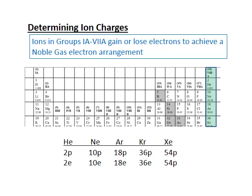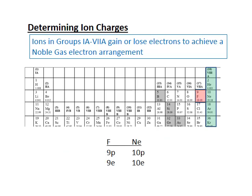The noble gases are: helium with 2 electrons, neon with 10, argon with 18, krypton with 36, and xenon with 54. Fluorine, the next-door neighbor to neon, currently has 9 electrons and 9 protons. If it gains one electron to achieve a noble gas configuration like neon, it would have 10 electrons and 9 protons — giving it a net charge of negative one. Elements in the fluorine family, group 7A, the halogens, readily take on a minus one charge.